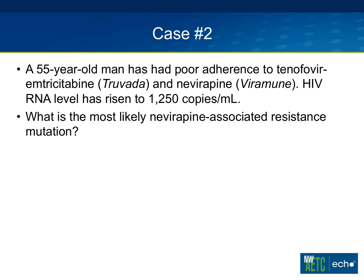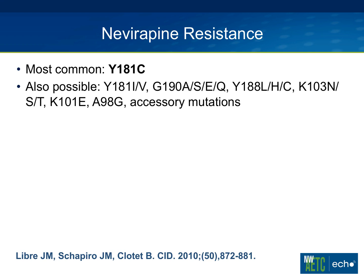Let's turn to another case. A 55-year-old man has had poor adherence to tenofovir-emtricitabine (Truvada) and nevirapine (Viramune). His viral load has risen to 1,250 copies. The most likely nevirapine-associated resistance mutation with virologic failure is at position 181 — most likely a Y181C, though 181I or V are also common. If a person stays on nevirapine while failing, they can accumulate these mutations. Remember the mutations at position 181 for when we discuss etravirine resistance.